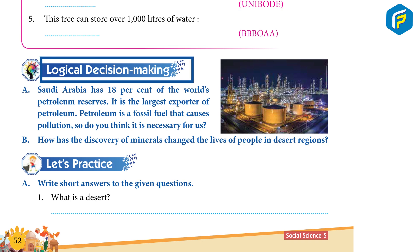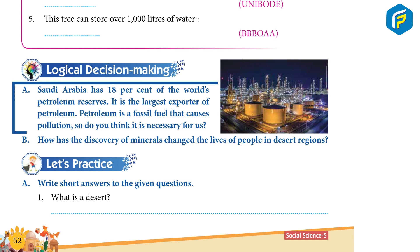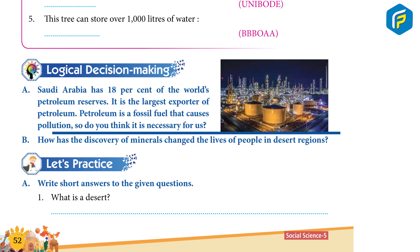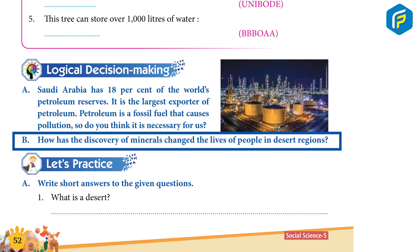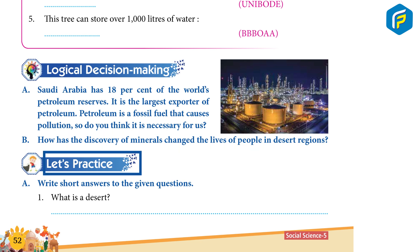Logical Decision Making: A. Saudi Arabia has 18% of the world's petroleum source. It is the largest exporter of petroleum. Petroleum is a fossil fuel that causes pollution, so do you think it is necessary for us? B. How has the discovery of minerals changed the lives of people in desert regions?